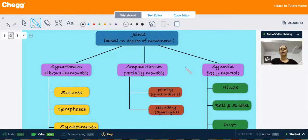In secondary, or symphysis type of amphiarthrosis, you can either have hyaline cartilage or fibrocartilage. An example of this is your pubic symphysis, where the pubic bones meet in the midline.